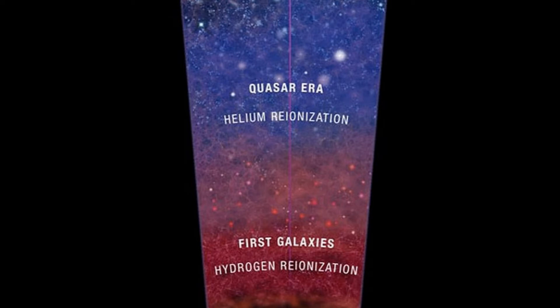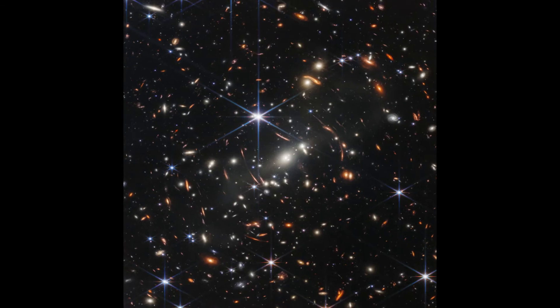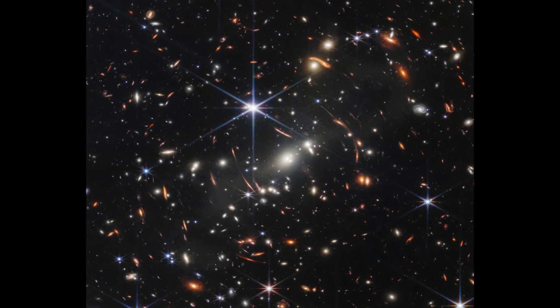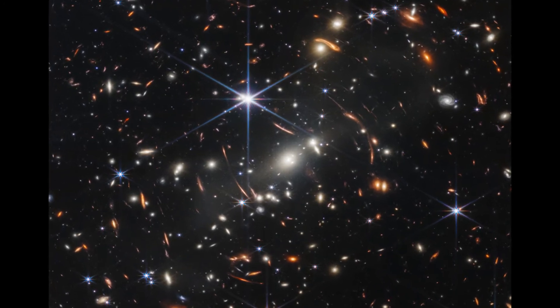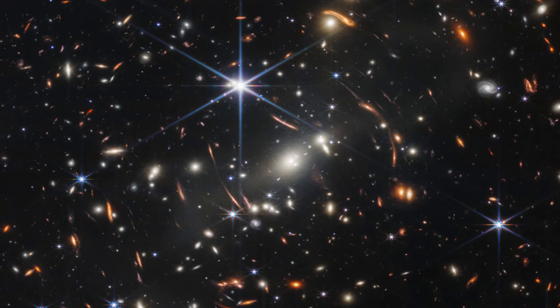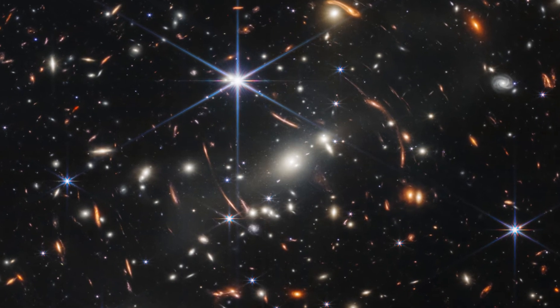Now let's compare the images. This deep field, taken by Webb's near-infrared camera, is a composite made from images at different wavelengths, totaling 12.5 hours, achieving depths at infrared wavelengths beyond the Hubble Space Telescope's deepest fields, which took weeks. The image shows the galaxy cluster SMACS 0723 as it appeared 4.6 billion years ago. The combined mass of this galaxy cluster acts as a gravitational lens, magnifying much more distant galaxies behind it.